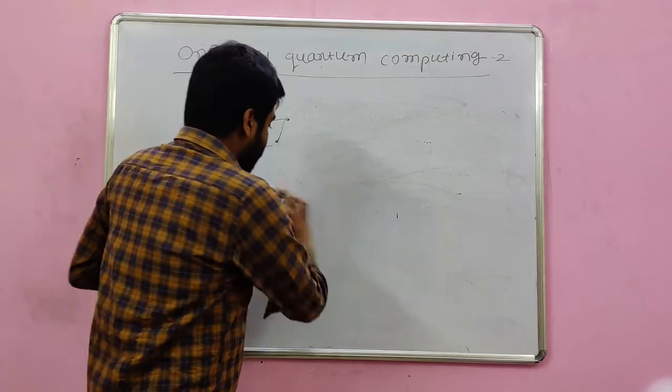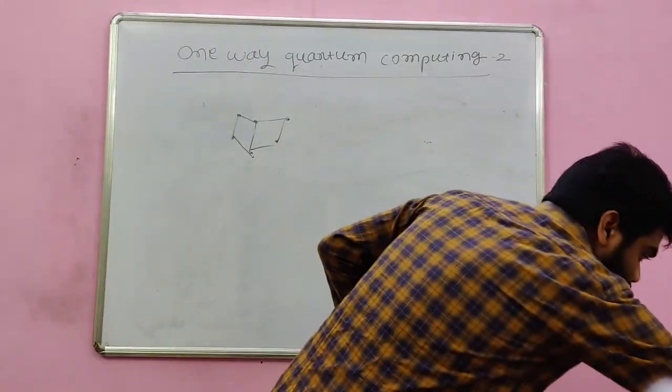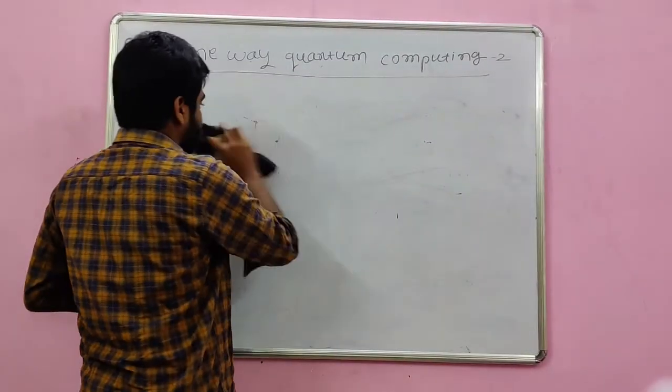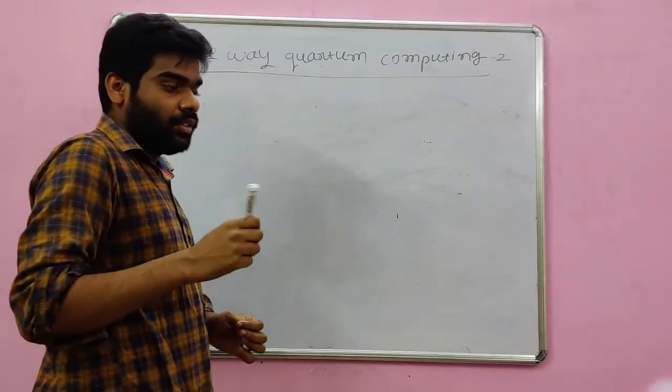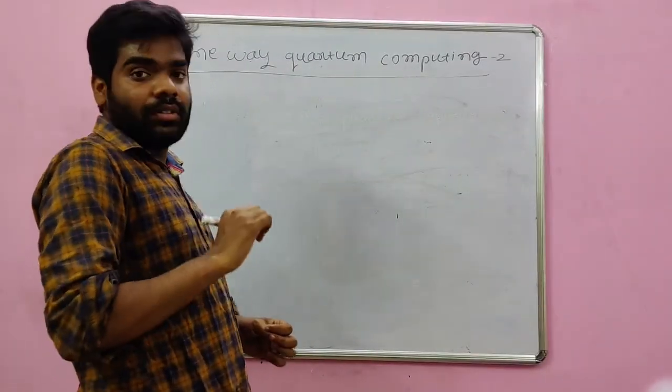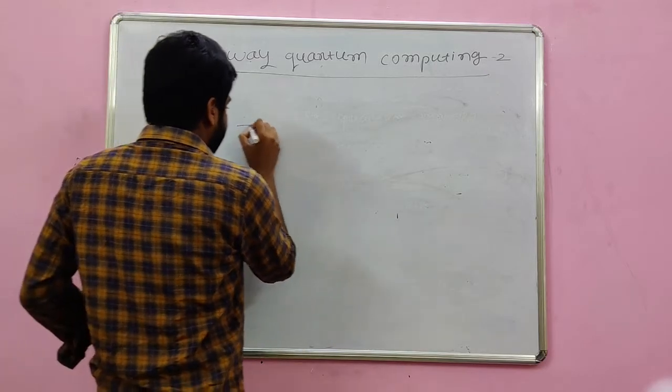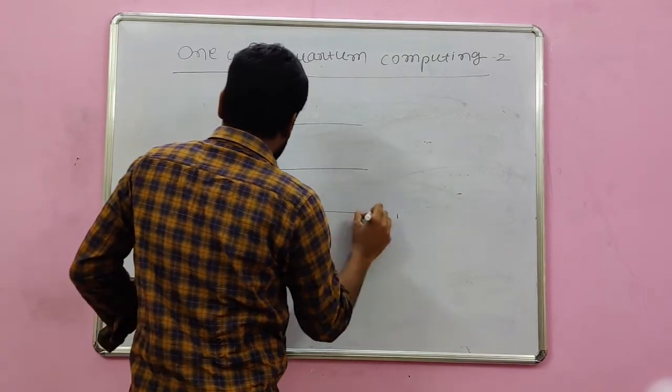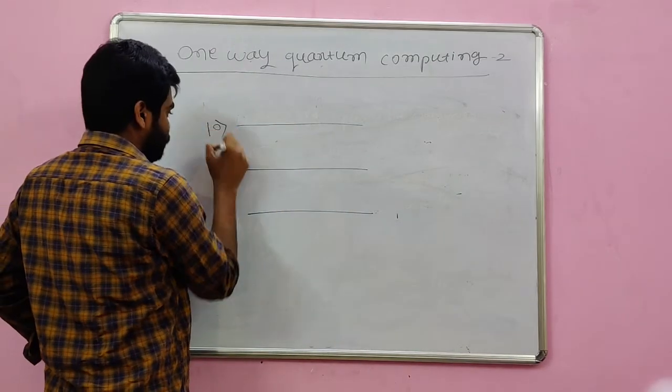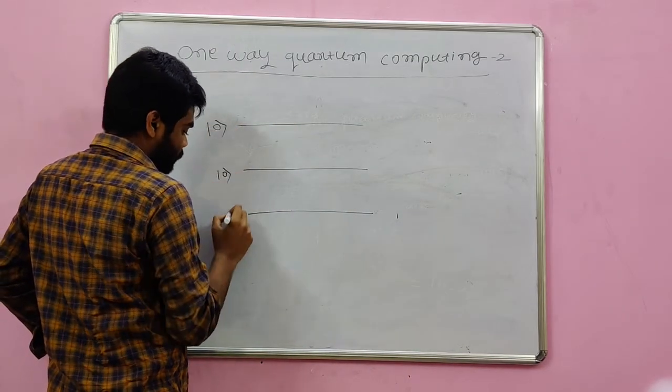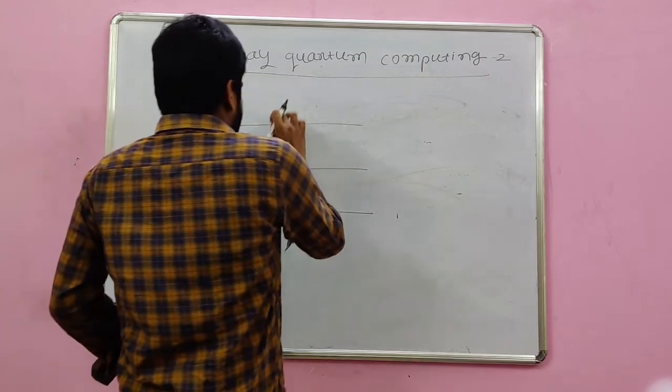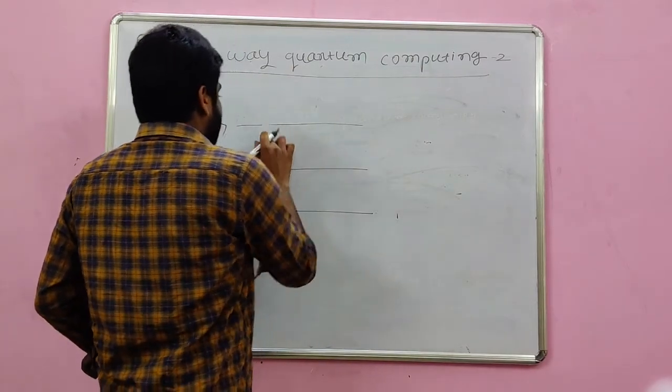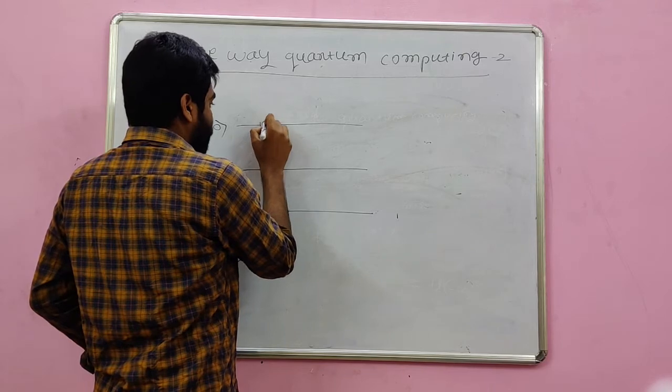First of all, I am going to prepare the cluster states for three qubits. Initially we apply Hadamard gate to all the qubits.